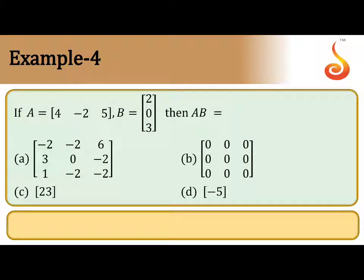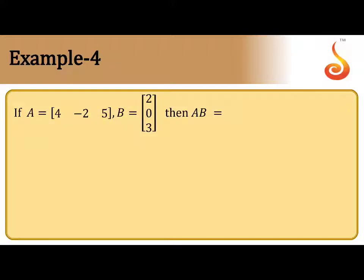Example 4: Two matrices are given, then AB is equal to — matrix A is [4, -2, 5] and matrix B is [2, 0, 3]. First matrix A is of order 1 by 3: one row, three columns. Second matrix B has three rows and one column: 3 by 1. The order of the product is very important — it will be 1 by 1, so you will have only one row and one column.